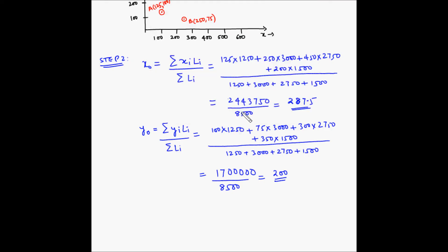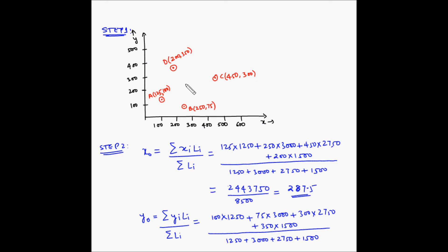Let us look at these new coordinates for the new facility on the grid map. The x coordinate of 287.5 will be somewhere here, and the y coordinate of 200 will be somewhere here. So the new facility is located around here, with coordinates (287.5, 200).